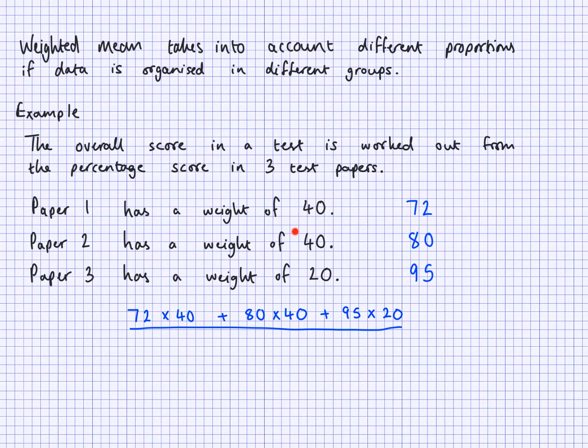Divide all of this by the total weighting, so the total weighting is 100. You're going to divide that by 100. This will give you some value here.